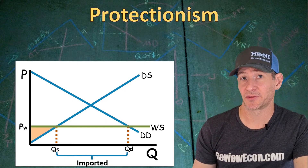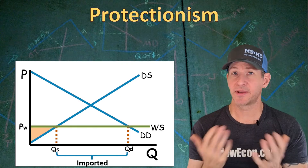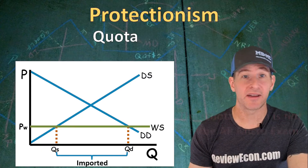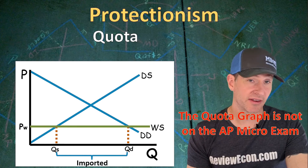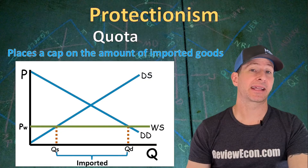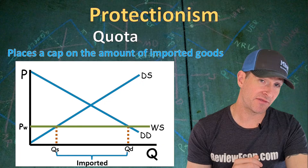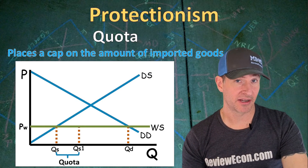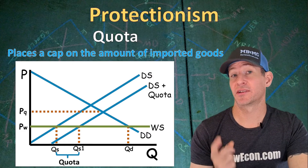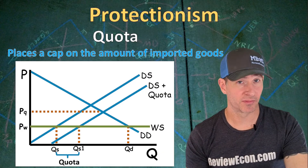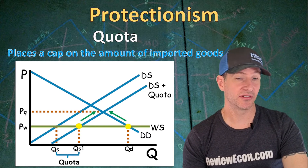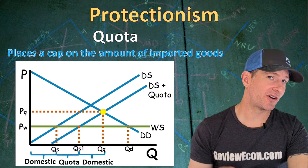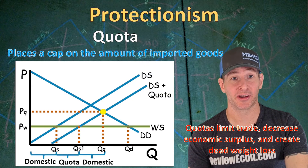Now let's get back to when the price was below the domestic equilibrium price. Producer surplus has shrunk to a tiny little triangle, so domestic producers are likely to lobby Congress and the President to impose protectionist policies. One of those protectionist policies is the quota system. The quota graph has not yet shown up on the AP microeconomics exam, but you should be aware of its impact on the market. A quota places a cap on the amount that can be imported — QD minus QS is what we would have imported without a quota. With that limit, a lower amount can be imported, resulting in a shift of the domestic supply curve. The domestic price with the quota will be lower than the domestic equilibrium but higher than the world price. In the end, you need to know that a quota limits trade, decreases economic surplus, and creates deadweight loss.